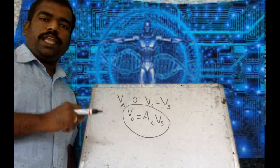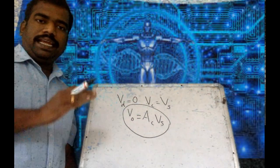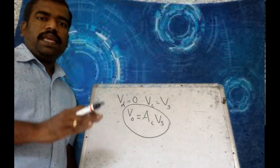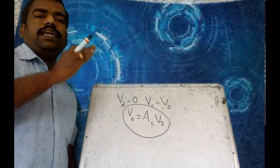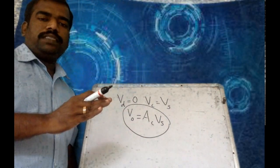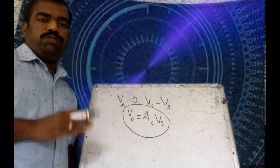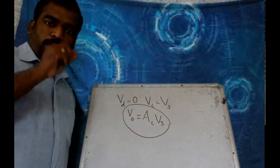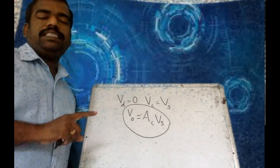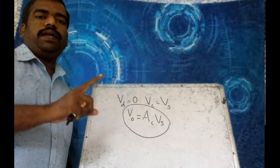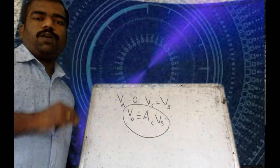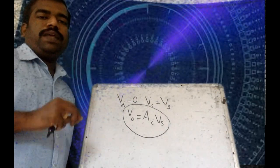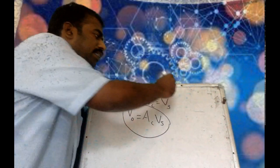Ideally, the common mode output must be 0. The operational amplifier will reject the common signal applied at the input terminals and amplify the difference between these two signals. This is the practical mode of operation of the operational amplifier — it has the property of rejecting common signals applied at the input, and this operation is called common mode rejection, expressed by a term called the Common Mode Rejection Ratio.